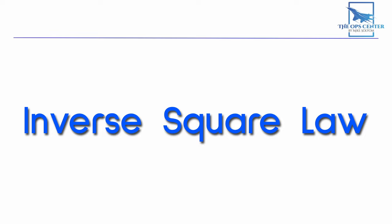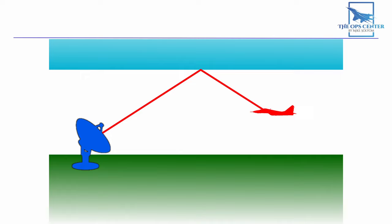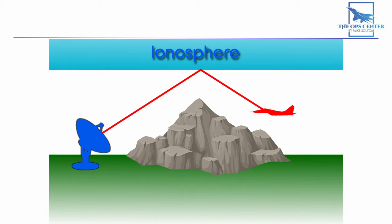Another factor that affects range is specific to low-frequency radars. At these lower frequencies, radar waves are reflected by the layer of ionized air in the atmosphere known as the ionosphere. So they can travel over terrain that would otherwise block the signal and reflect back from objects at an even longer distance.